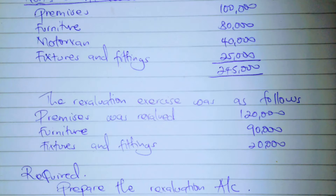Premises was revalued from 100k to 120k. Furniture was also revalued from 80k to 90k — its value increased, and so did the value of premises. Fixtures and fittings was revalued from 25k to 20k — its value reduced. We are required to prepare the revaluation account.